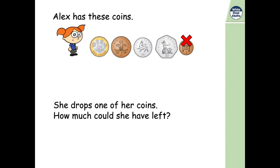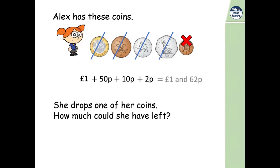Okay, so this time she's dropped her one pence coin. How much has she got left? We've got one pound, add 50 pence, add 10 pence, add two pence. It gives us one pound and 62 pence.